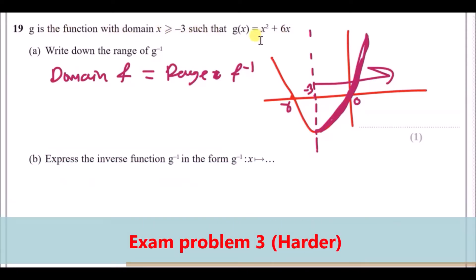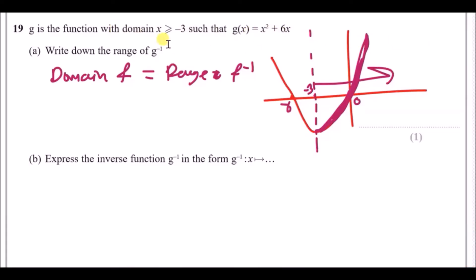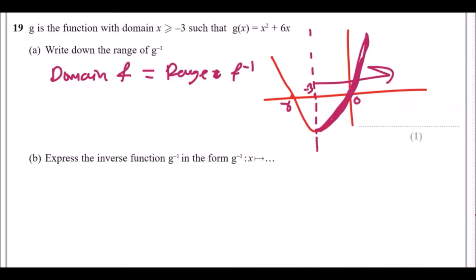g is the function with domain x ≥ −3 such that g(x) equals this quadratic function. The domain is simply the values x is allowed to take. Looking at the graph, when it says x ≥ −3, we only care about the curve after x = −3 onwards — we don't care about the left-hand side at all. The question says write down the range of the inverse of g. The rule: if you know the domain of a function, the range of its inverse is equal — so the range is y ≥ −3.